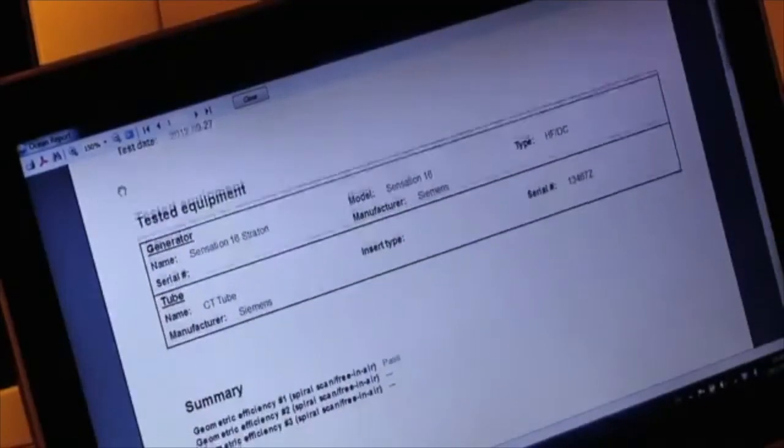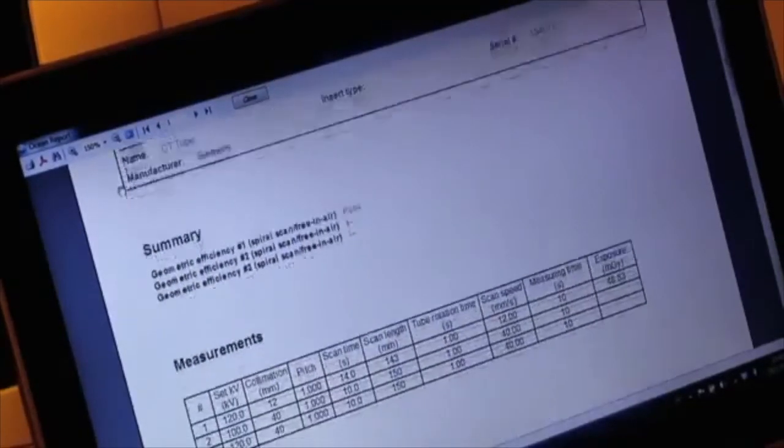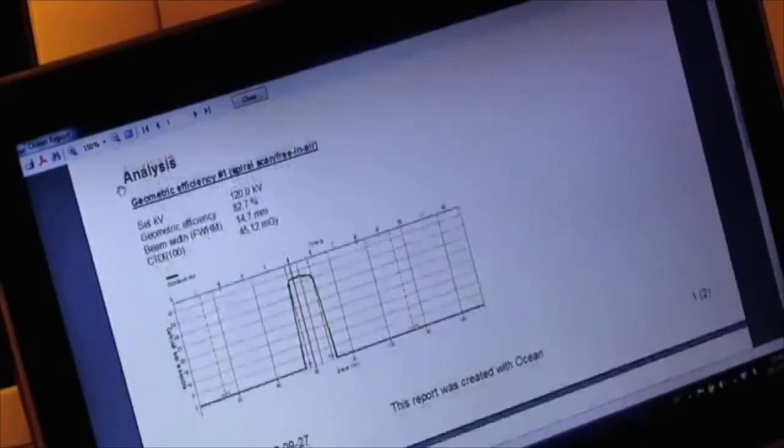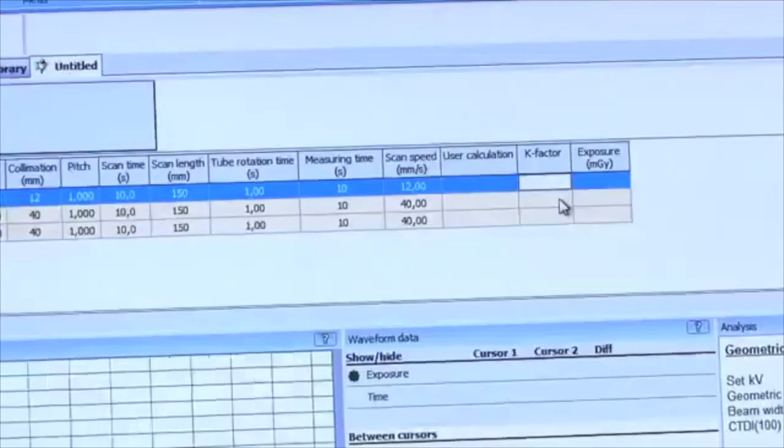To print a customized report, just go to Reporting. For Ocean professional users, you can of course customize the measuring template any way you like.